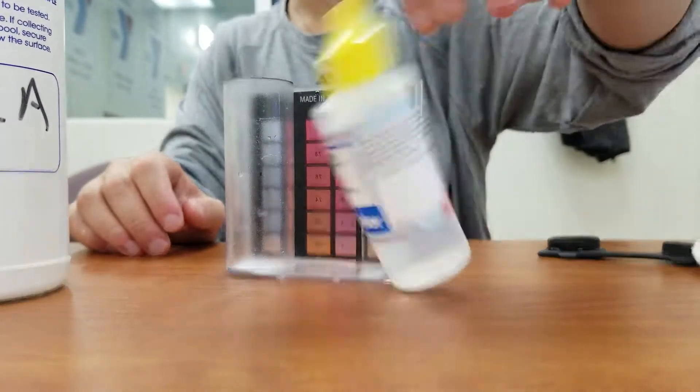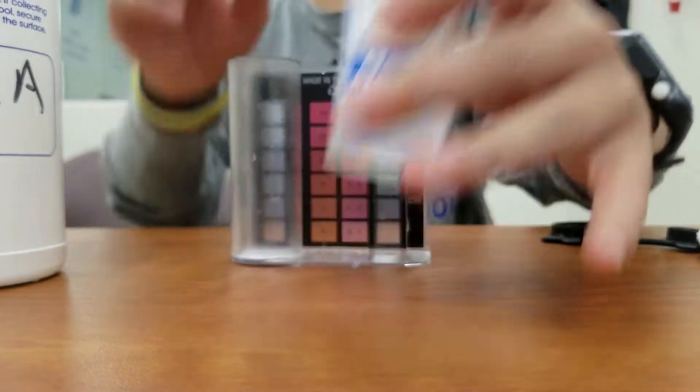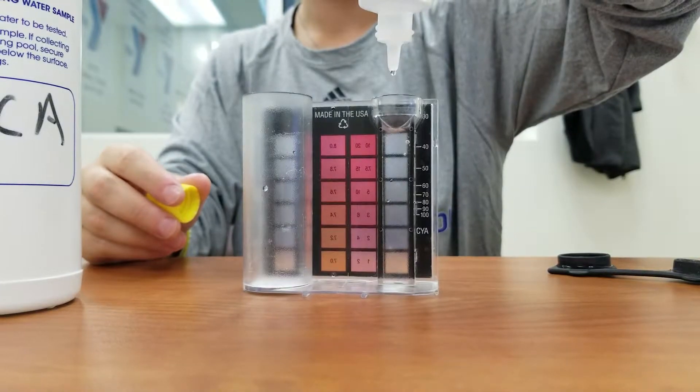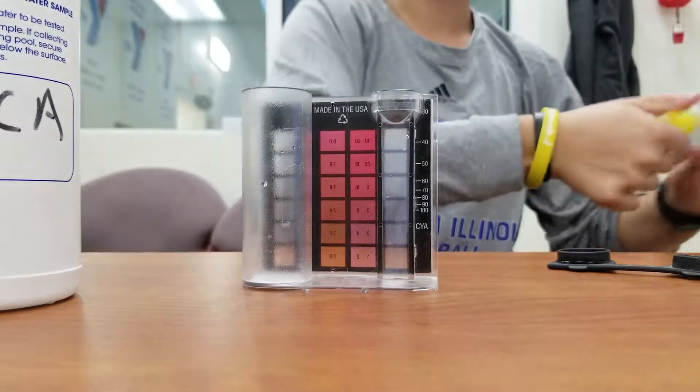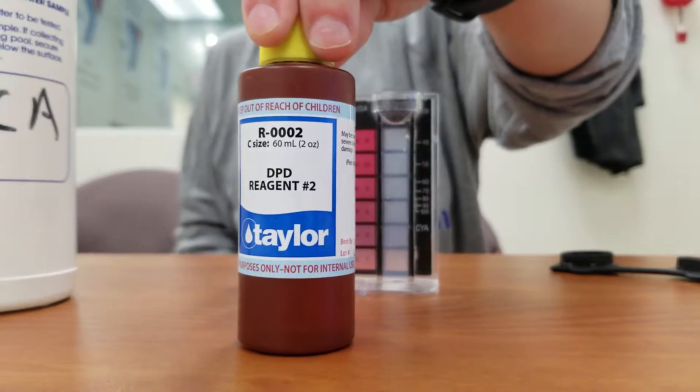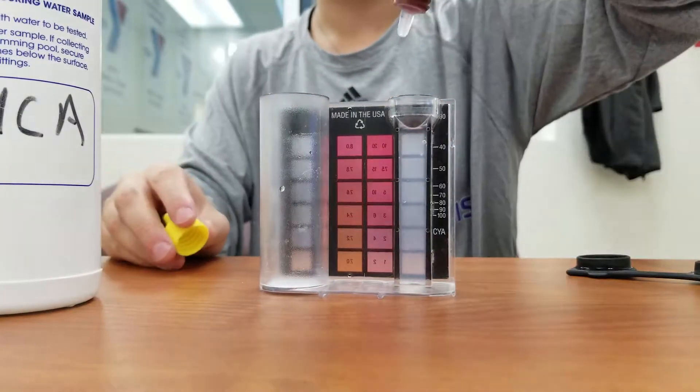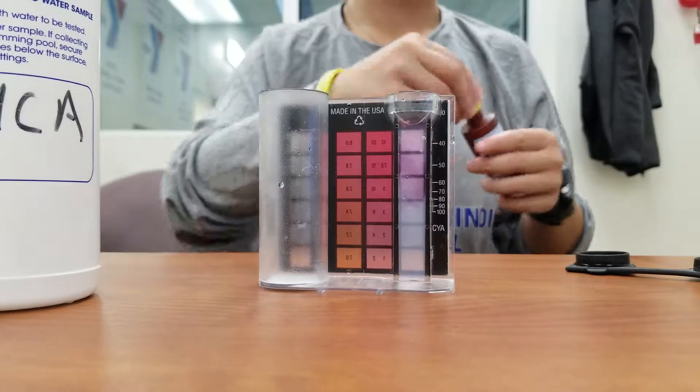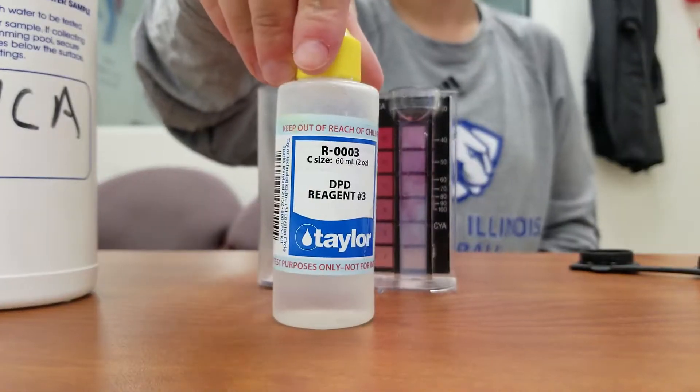We're going to take five drops of R001, reagent number one, and add it to the solution. Now we'll take five drops of R002 from the brown bottle, cap it, and shake it.